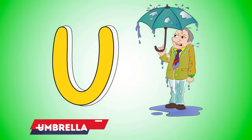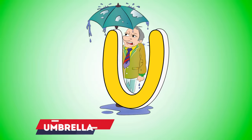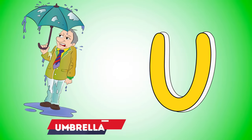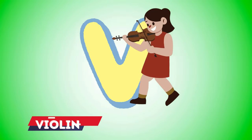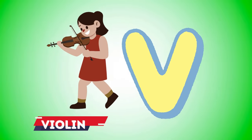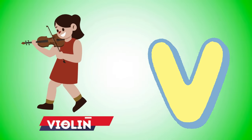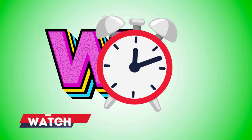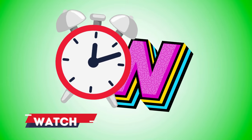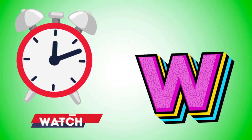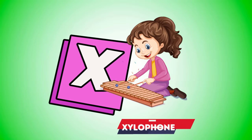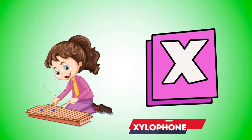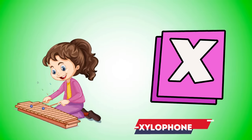U is for umbrella, u-u-umbrella. V is for violin, v-v-violin. W is for watch, w-w-watch. X is for xylophone, x-x-xylophone.